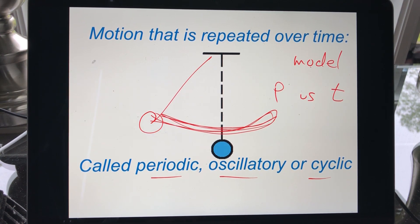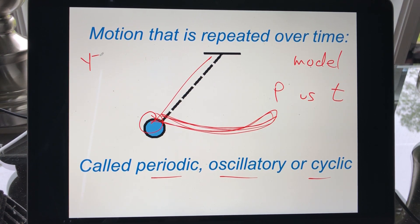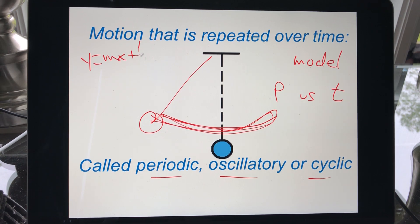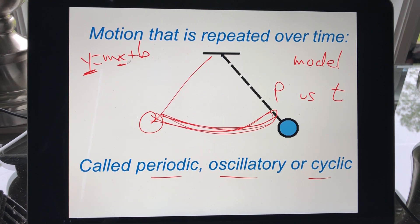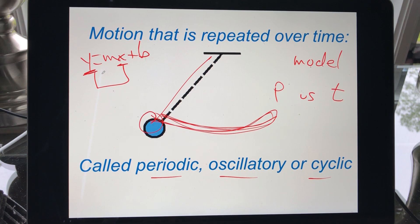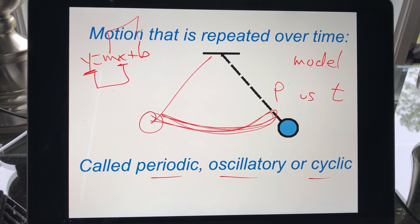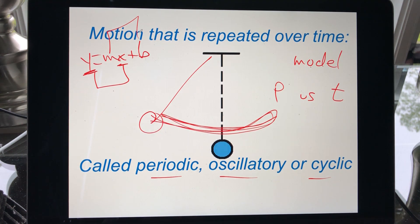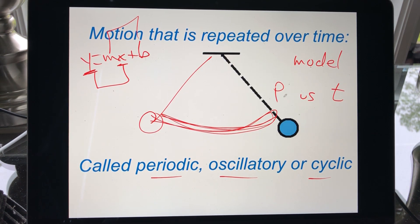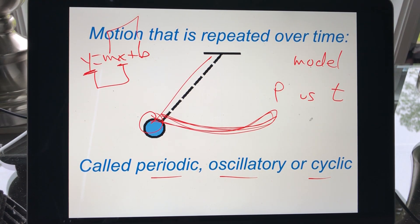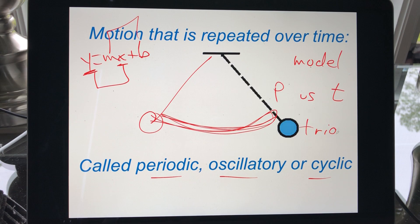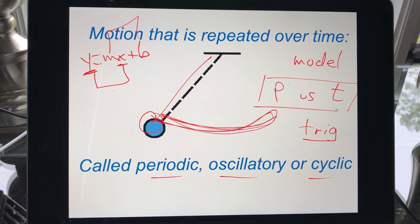We link two variables together all the time — think of y = mx + b, where y and x are the two variables linked together, and m and b give information about that specific case. We've done this before; this is just a more complicated version of it. To write this model properly, we're going to use some properties from trigonometry.